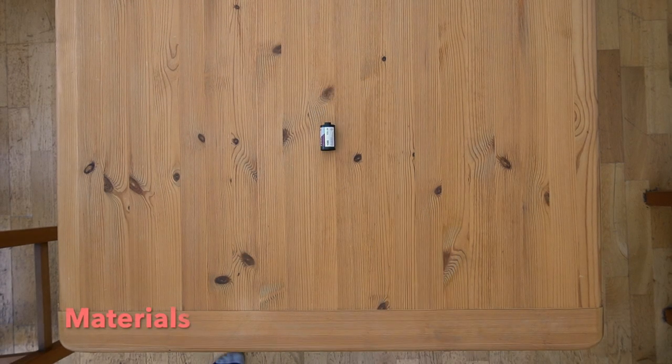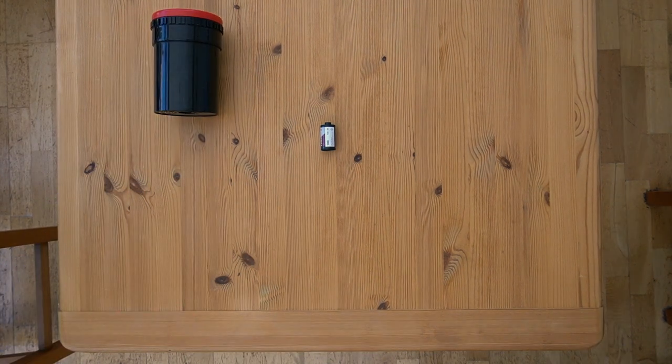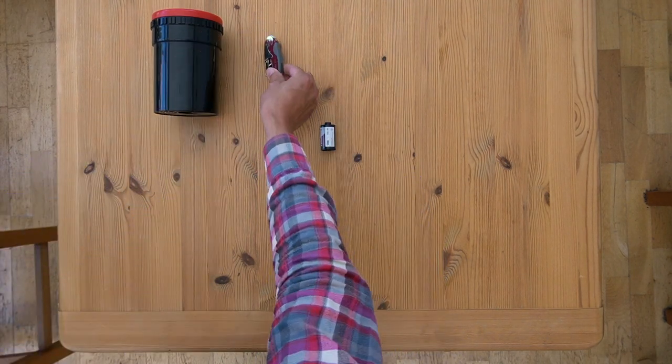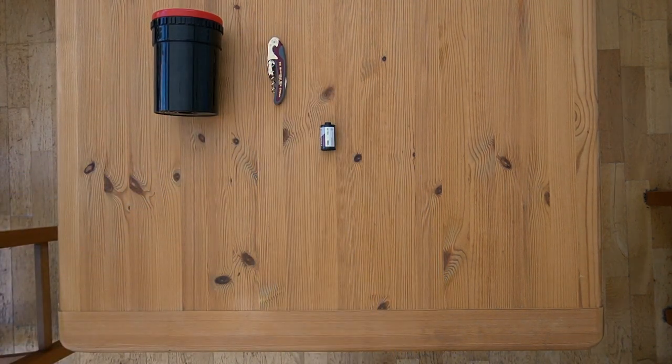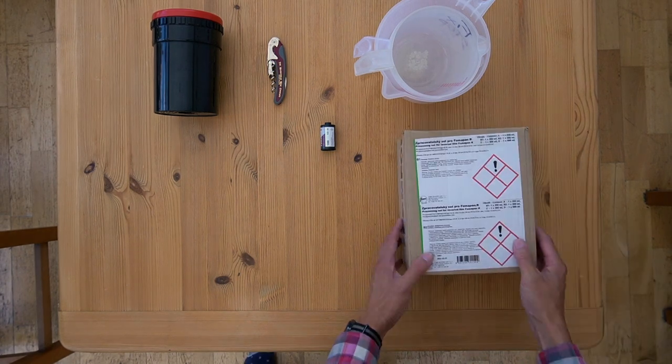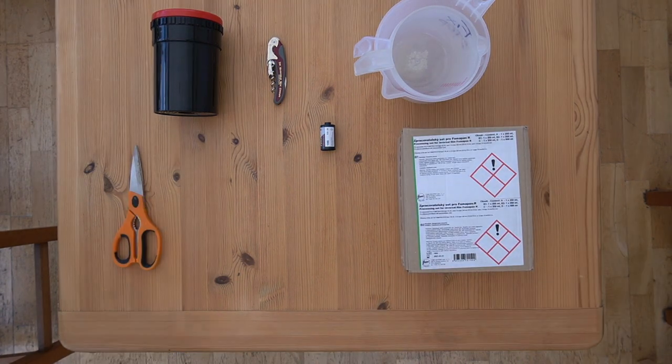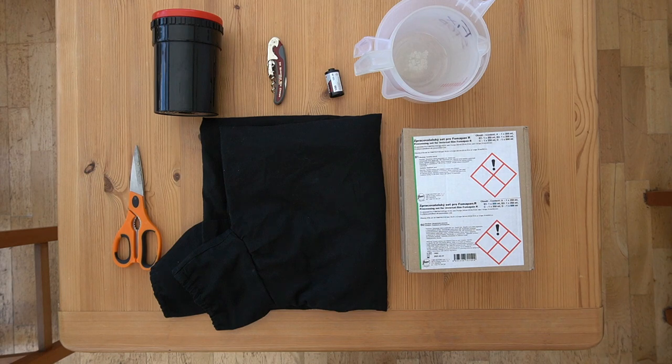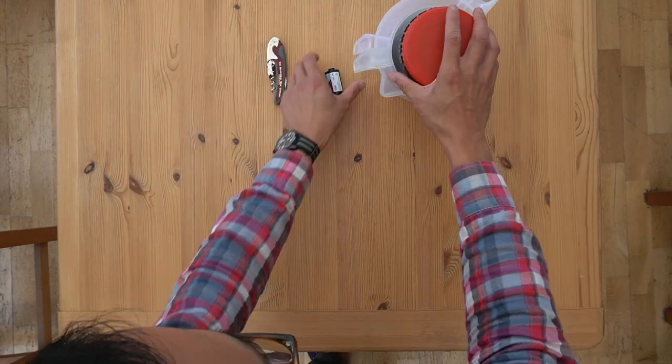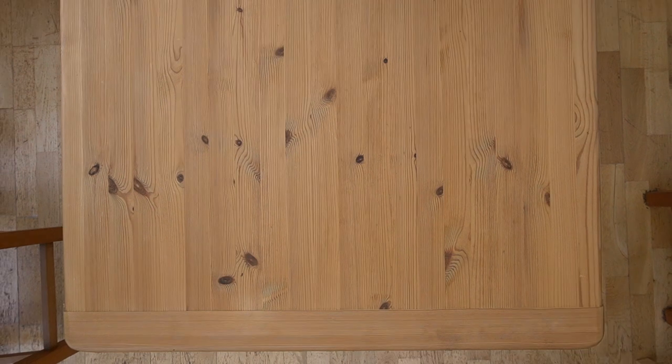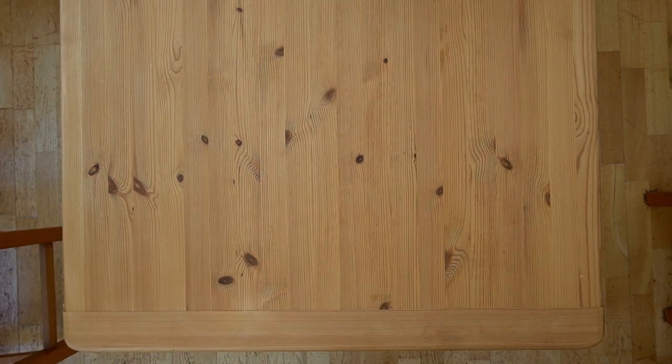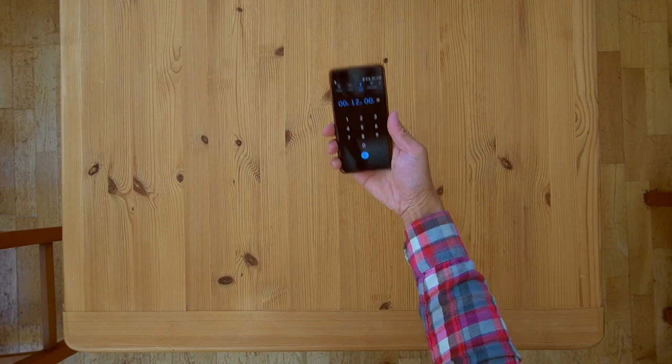So to start off with we need the film, we need a developing tank, to open the film I'm using a bottle opener which is sufficient, some mixing jugs, the chemicals itself, a pair of scissors to cut the film off the roll and all will be loaded in a light proof bag. On top of this we also need a smaller measuring jug for finer measurements and a watch to take the time with.